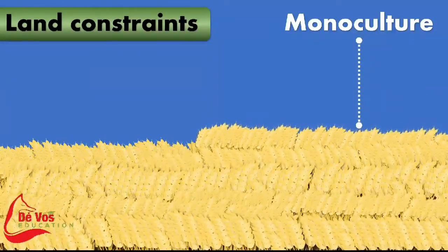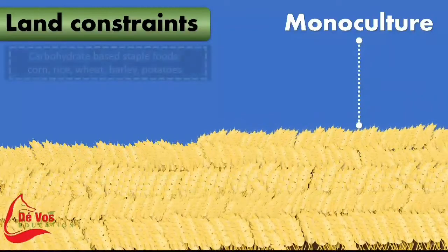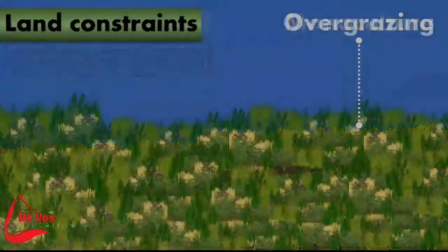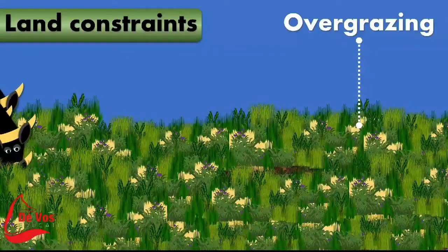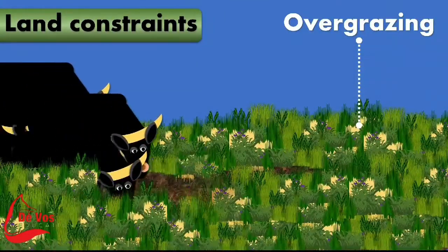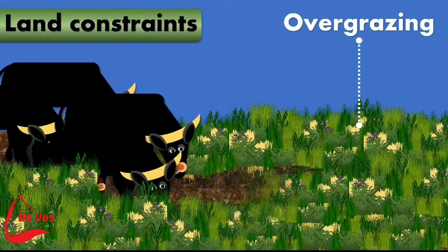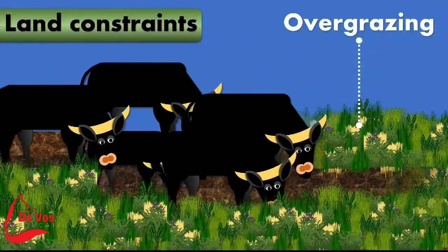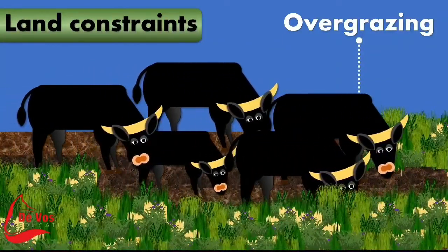Land degradation can be due to the misuse of soil and vegetation beyond the ecosystem's ability to recover fully. The causes of this misuse are often population pressures that have resulted in overgrazing.